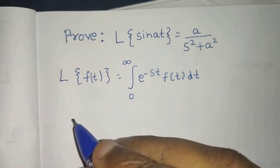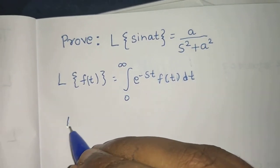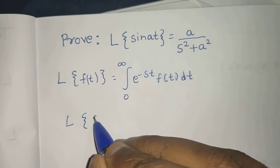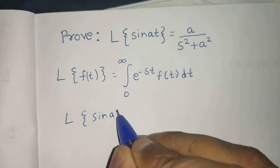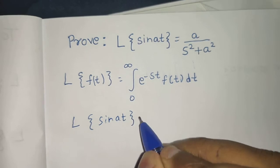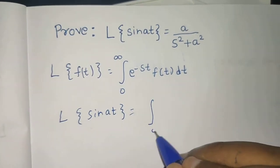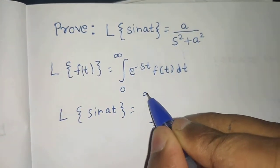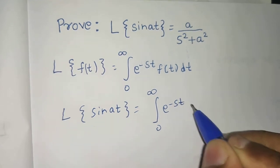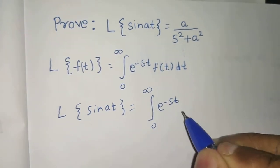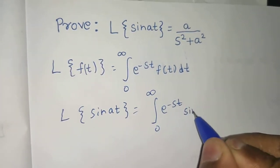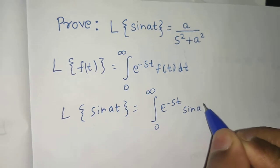Now we need to find the Laplace of sine at. So this will be equal to the integral from 0 to infinity of e to the power minus st, and in place of F(t) we will have sine at, dt.